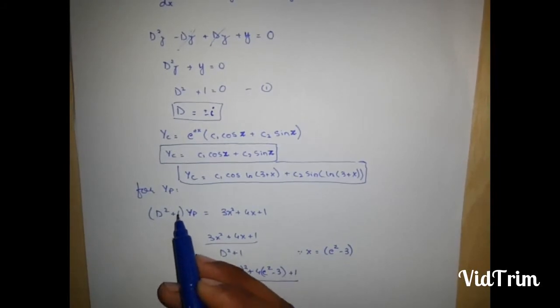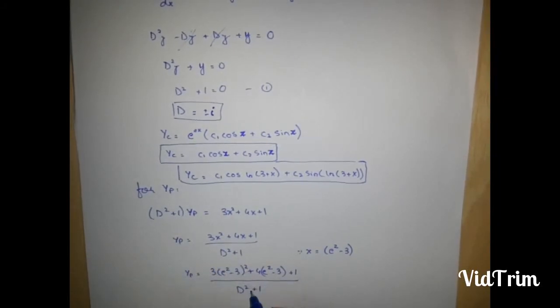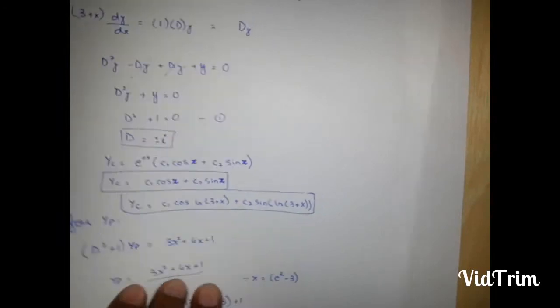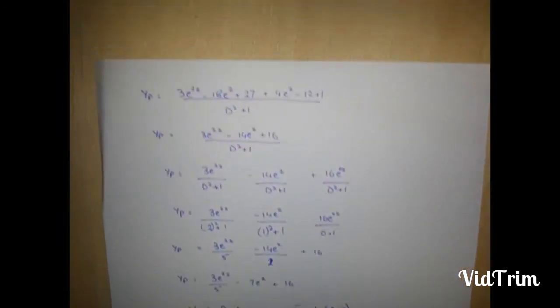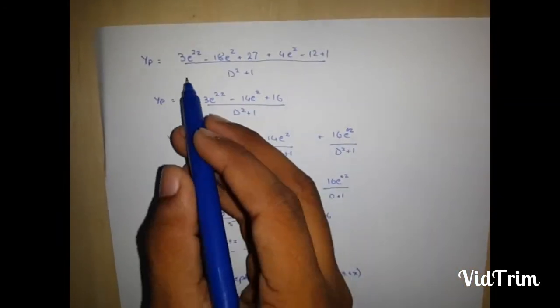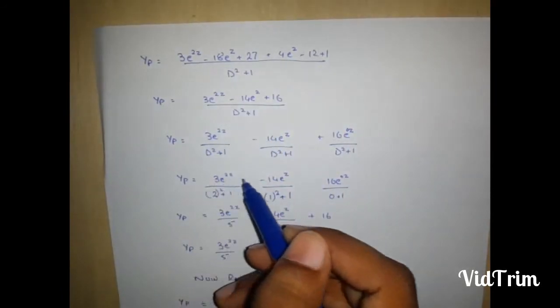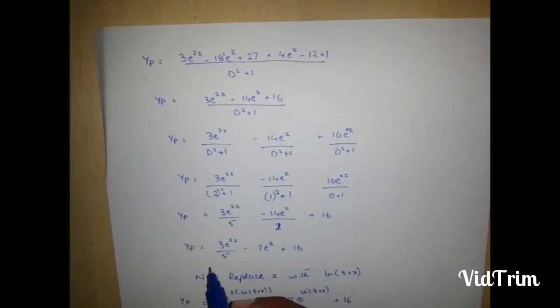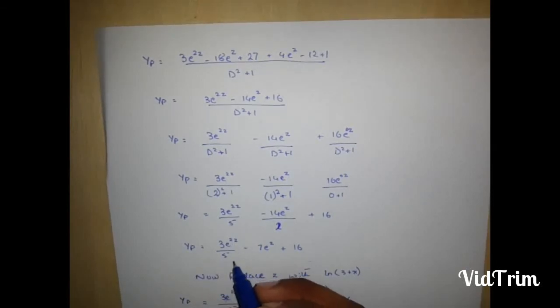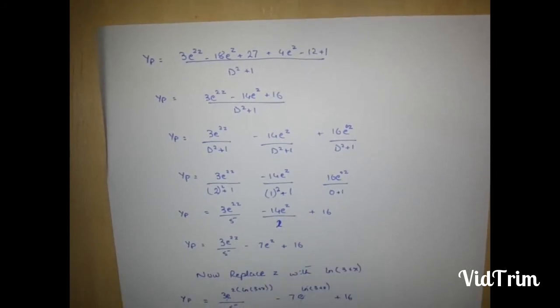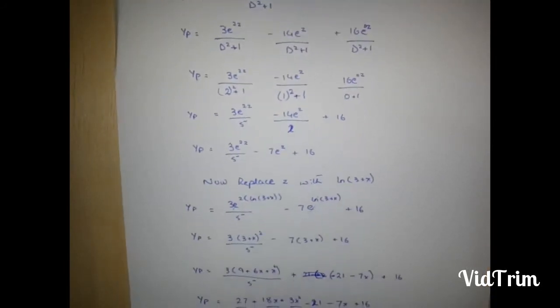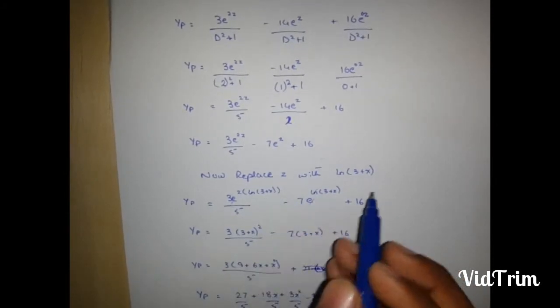I put this here and now simplify it like this. I simplified it like this. After simplification, it becomes 3e to the power 2z upon 5 minus 7e to the power z plus 16. Replace z with ln 3 plus x.